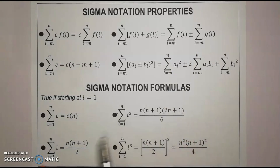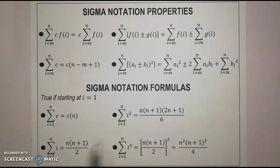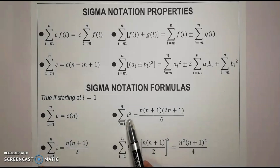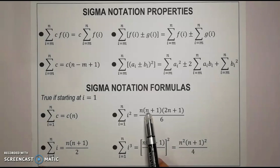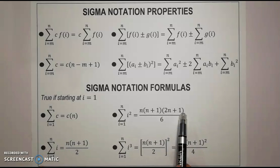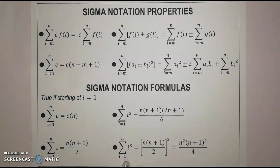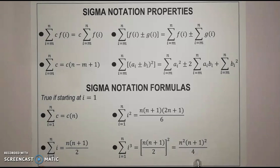For the sigma notation formulas: if we have a constant which starts from 1 until n, we just multiply it by the upper limit. If we have a variable i, we multiply by the upper limit times n plus 1 over 2. For i squared, it's n times n plus 1 times 2n plus 1, all over 6. And for the cube of i, it's the square of n times n plus 1 over 2, or n squared times the square of n plus 1 over 4.